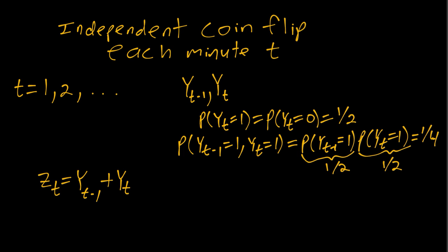For example, if we wanted to say, what's the probability that zt equals two? Well, the only way yt minus one plus yt could equal two is if both are equal to one.